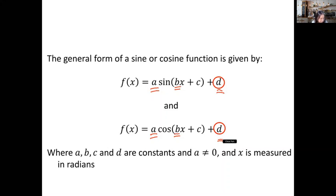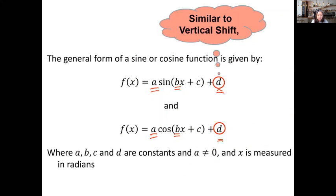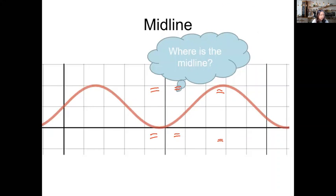D will involve the vertical shift. With d as a positive number, it shifts the graph of sine or cosine up; with a negative value it shifts down. You can connect this with all other function equations and how the d value at the end involves the vertical shift.